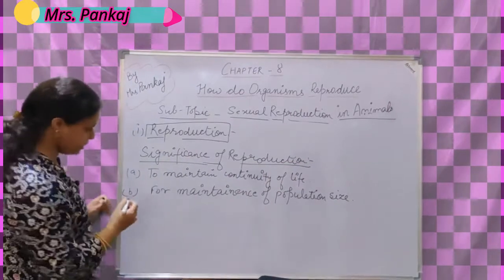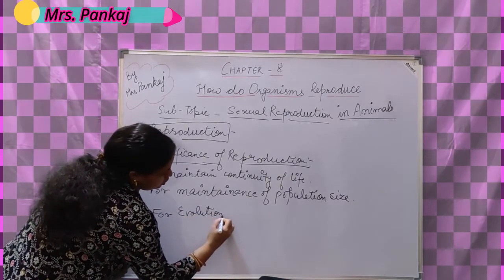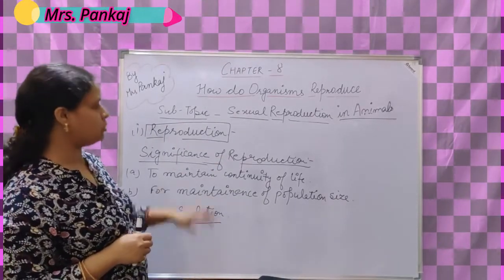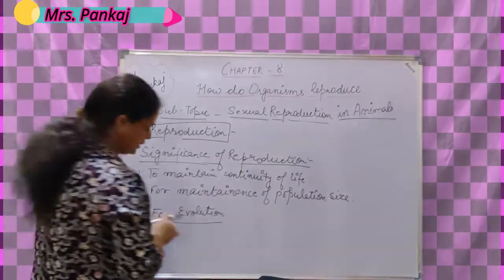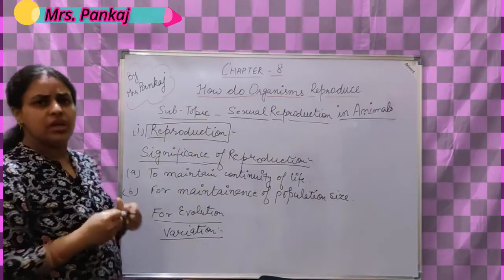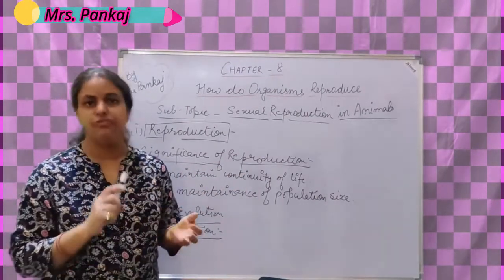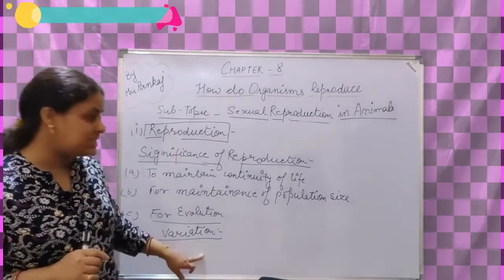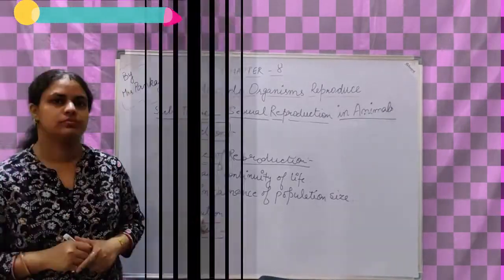So these both are important points. The third is for evolution - you'll have a better idea in the chapter on heredity and evolution, but reproduction is also important for evolution. Related with this, we use another term: variation. Variation in simple language means difference - difference in structure, difference in physiology, or difference in any of the traits found in individuals. These differences arise by the process of reproduction and help in the process of evolution.